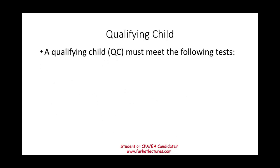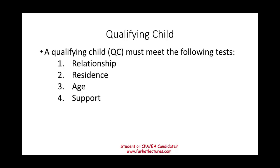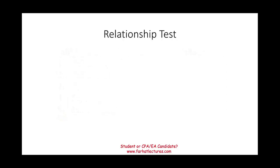Starting with the qualifying child, we have five tests to go through: the relationship test, residence test, age test, support test, and joint return test. I'm going to go through each of these in detail to explain the concept.